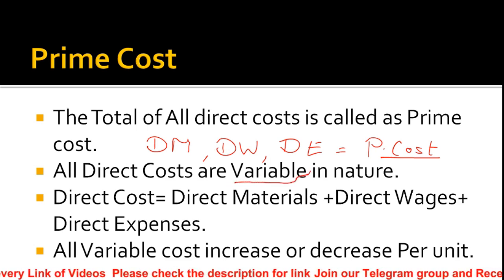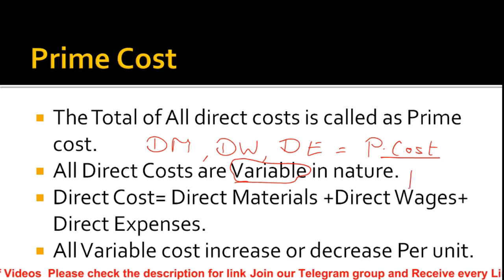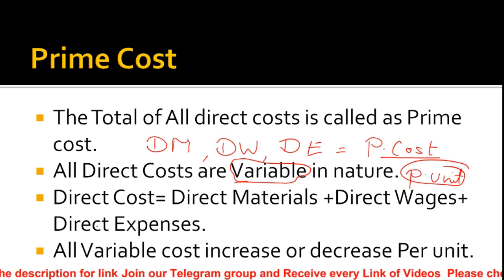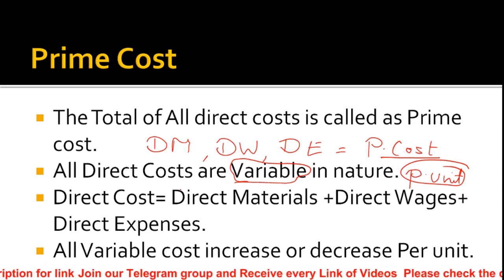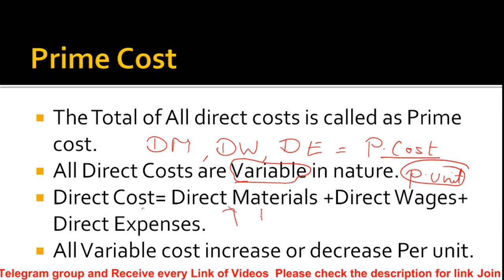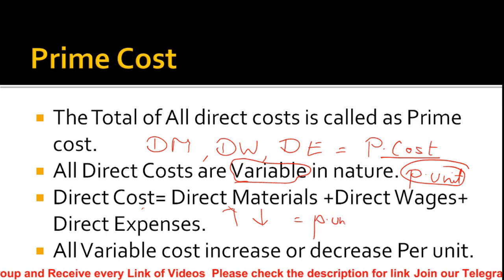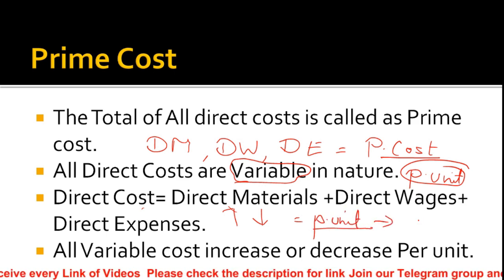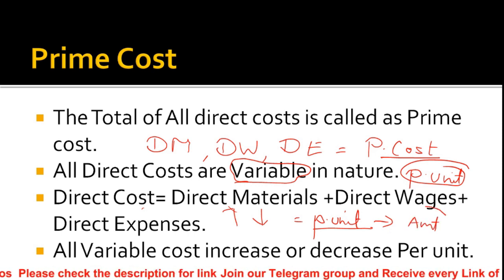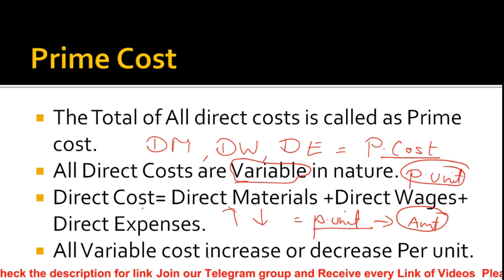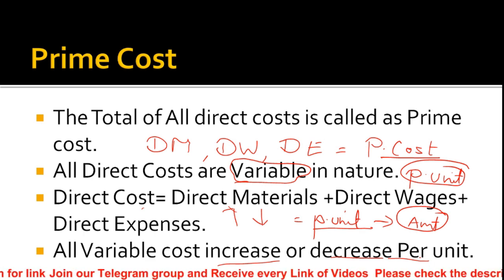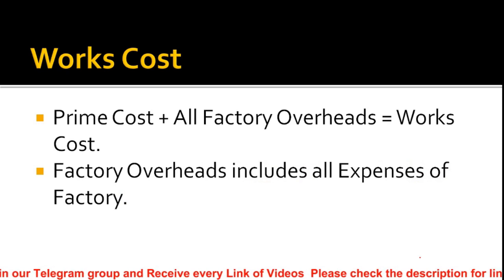Direct costs are variable in nature, meaning they are calculated on a per-unit basis. All direct costs are variable and increase per unit. This is an important point to keep in mind when estimating costs.